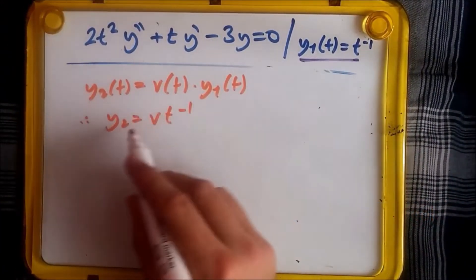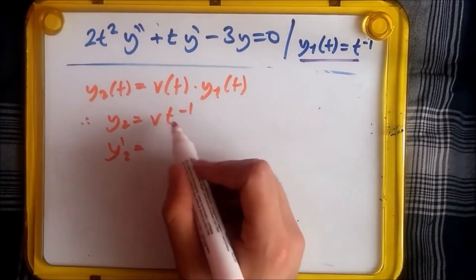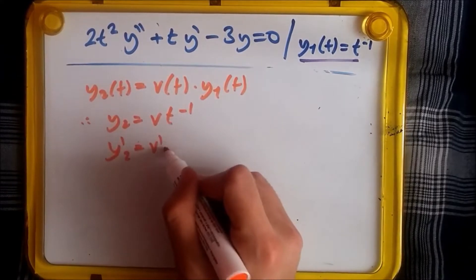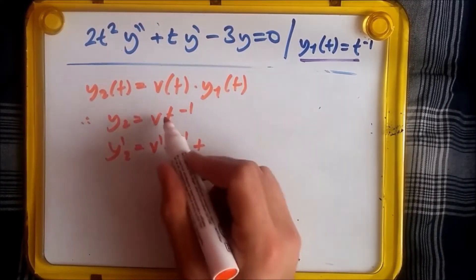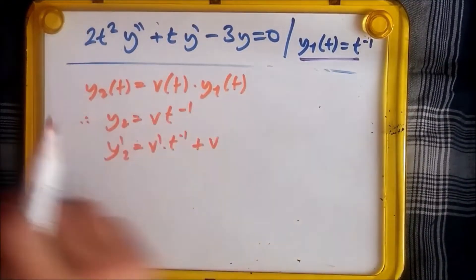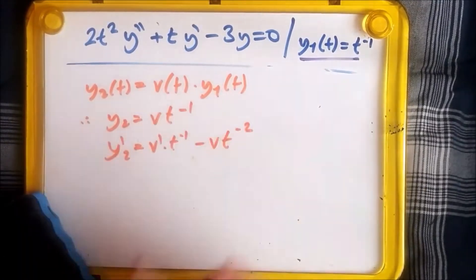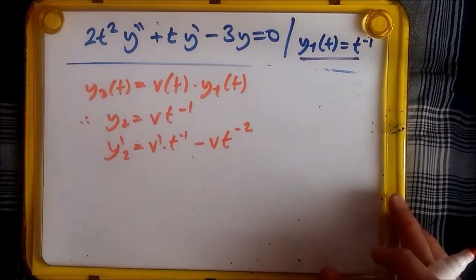Now taking first two derivatives so we can plug it back in, we should get the first derivative which is differentiation using the product rule. We get v prime times t to the minus one plus - now we leave this alone and times it by - we drop the power minus one down. So this becomes minus v times t to the power minus two. Simple case of product rule applied.